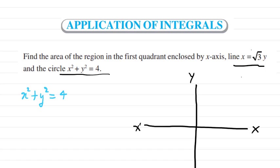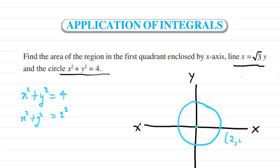The equation of the circle is x² + y² = 4. You can see it is two squared, so the radius of this circle will be two and the center will be (0, 0). This point will be (2, 0) and this point will be (0, 2). As we have to calculate the first quadrant only, I'm not writing the other coordinates.